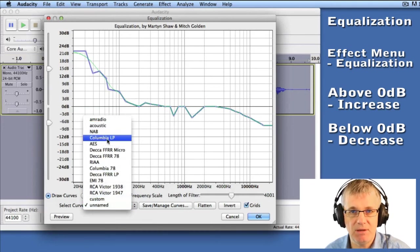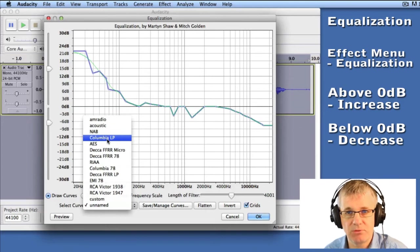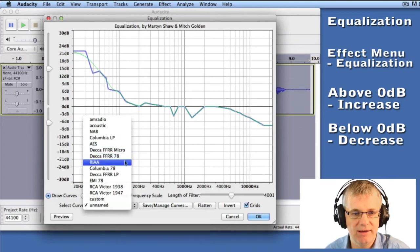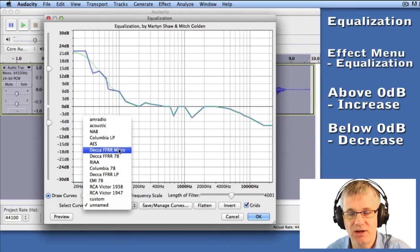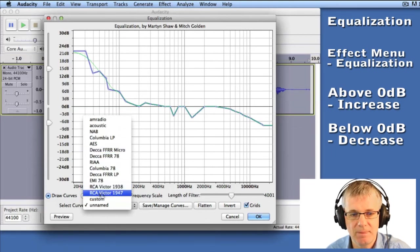Audacity's presets mimic some old recording processes from the past. We have DECA 78, RCA Victor 1938, RCA Victor 1947. There's quite a few here, and you can play with these to see what they do. Let's choose the RCA Victor 1947.